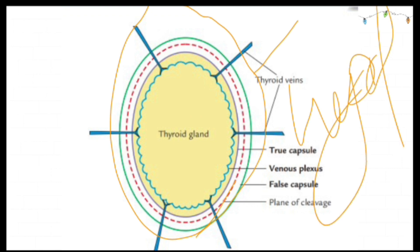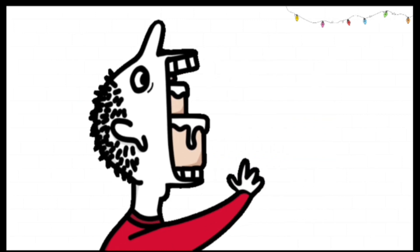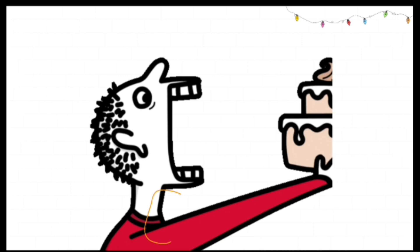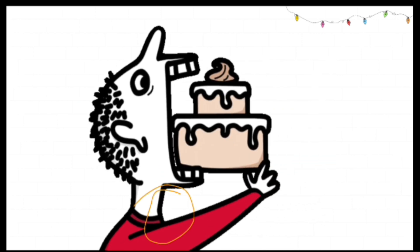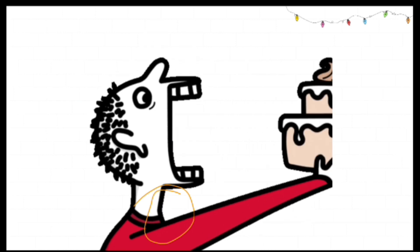On the medial surface of the thyroid lobe, the pre-tracheal fascia thickens to form the suspensory ligament of Berry, shown as a white structure, which connects to the cricoid cartilage. Another important point is that the thyroid gland moves up and down during swallowing because of its attachment to the cartilage and hyoid bone. This makes it easy to diagnose a thyroid swelling.